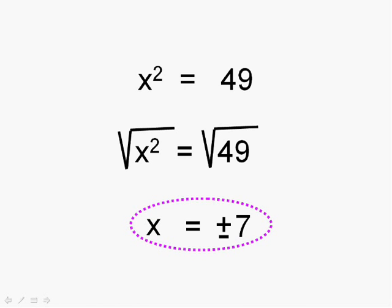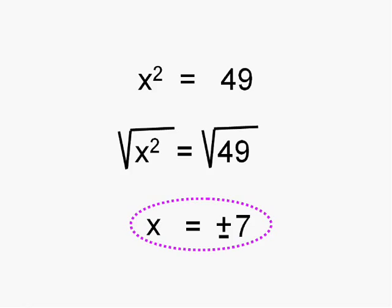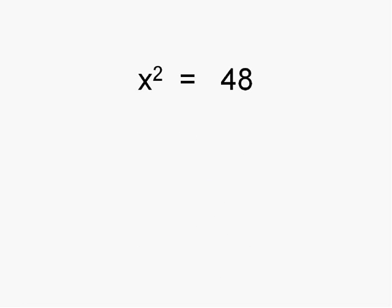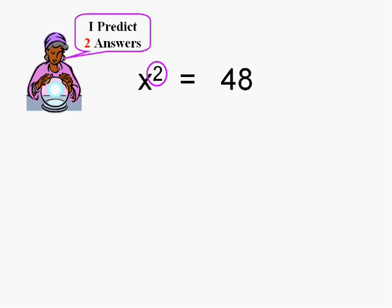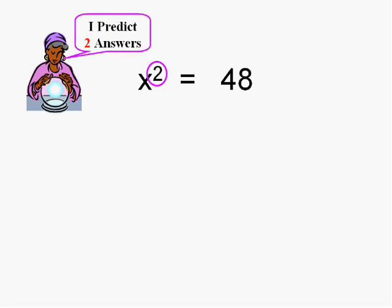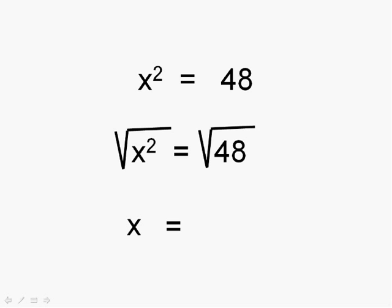Now this should still work even if the root doesn't come out even. Let's do the same thing here. We better get two answers of some sort because it is an x squared. Well, I want to get x by itself. So I want to undo that squared and what undoes a squared is the square root. That's the inverse. Of course if we do it on one side, we have to do it on the other.